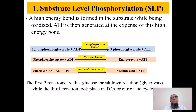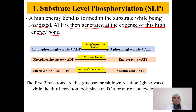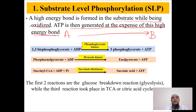In substrate level phosphorylation, a high energy bond is formed while the substrate is being oxidized. ATP is then generated at the expense of this high energy bond. For example, in a reaction, substrate A is converted into product B, and during this conversion, ADP is phosphorylated to make ATP. Because ATP is synthesized during the reaction at the site of the substrate, we call it substrate level phosphorylation.